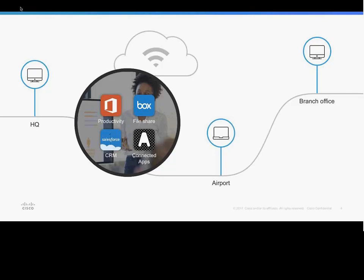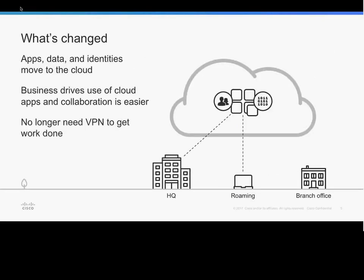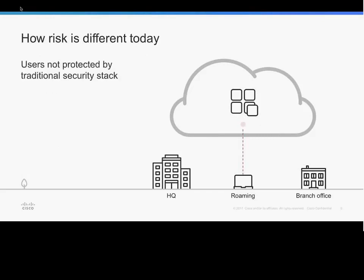There are huge efficiencies and productivity gains from this way of working, but a lot has changed. Two key areas stand out. First, the business-critical applications we now use are all being hosted in the cloud. Second, the way businesses run means we work wherever we are - in the office, at the airport, at home - and the cloud is enabling huge collaboration between organizations. This means new risks: users are no longer protected by the traditional security stack we've been building for the last 5, 10, or 15 years.